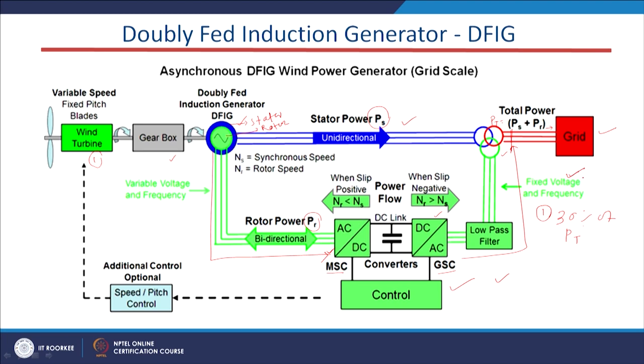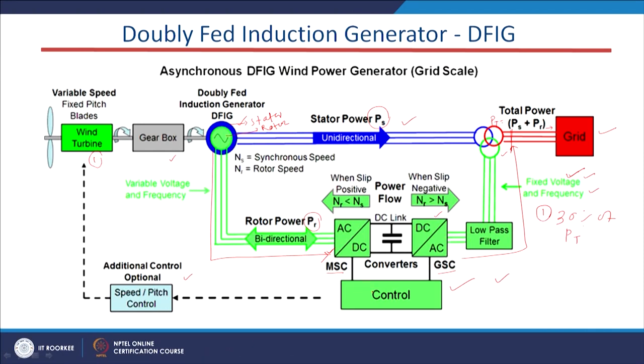Without fixed voltage and frequency we cannot connect the wind system to the grid at the PCC. We need to supply improved power quality to the customers and loads, so voltage and frequency must be maintained fixed at the PCC — that is why DFIG is the best option. Additionally, the control system supplies information about speed and other factors so we can control the pitch angle of the wind turbine blades, and dedicated control systems exist for both the rotor side converter and the grid side converter.